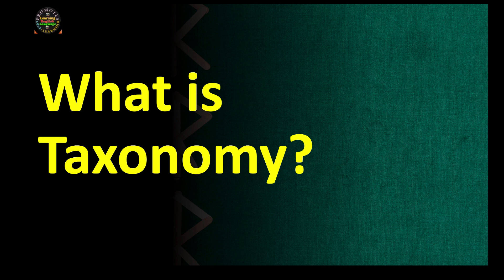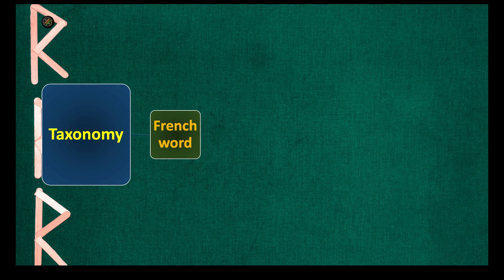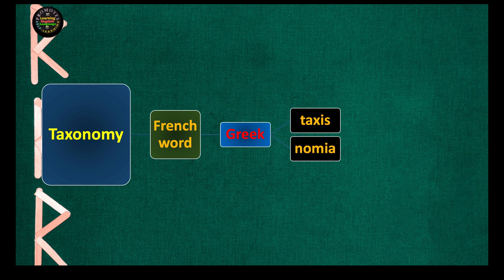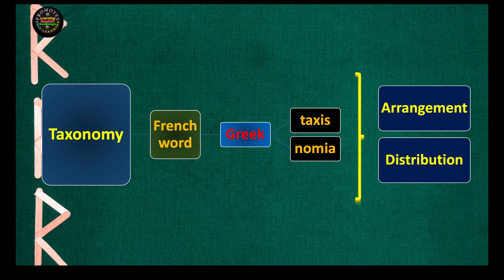Hello and welcome to a new topic: what is taxonomy? The word taxonomy is a French word which finds its origin in Greek. In Greek, we have two terms from which the word taxonomy is made: the first one is 'taxis' and the second one is 'nomia.' Together they form the word taxonomy in French, and literally it means arrangement or distribution. This is the literal interpretation of the word taxonomy.